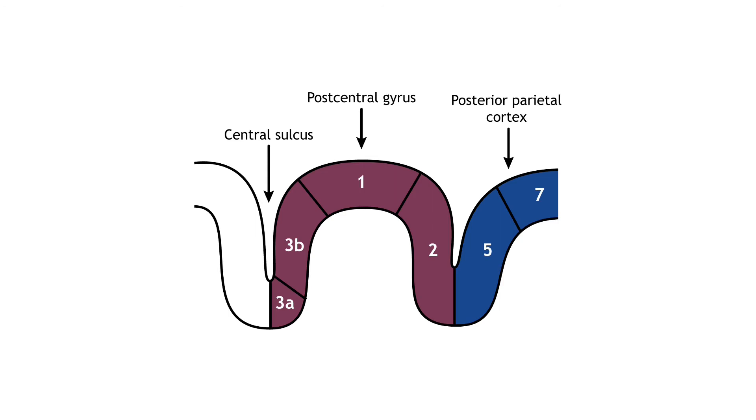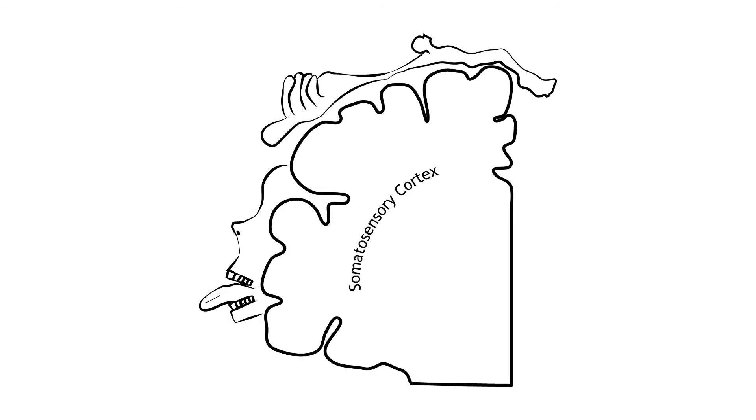The posterior parietal cortex, an important output region of the somatosensory cortex, lies caudal to the postcentral gyrus. Areas 5 and 7 are downstream structures that continue to process touch. The receptive fields of each higher-order neuron increases in size and complexity, but even cortical neurons are associated with a specific region of the body.